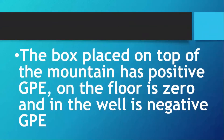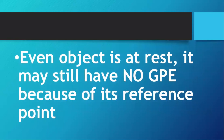The box placed on top of the mountain has positive gravitational potential energy. On the floor, it is equivalent to zero because that is our reference point. In the well, it has negative gravitational potential energy. This means that even when an object is at rest, it may still have zero gravitational potential energy if we use that position as our reference point.